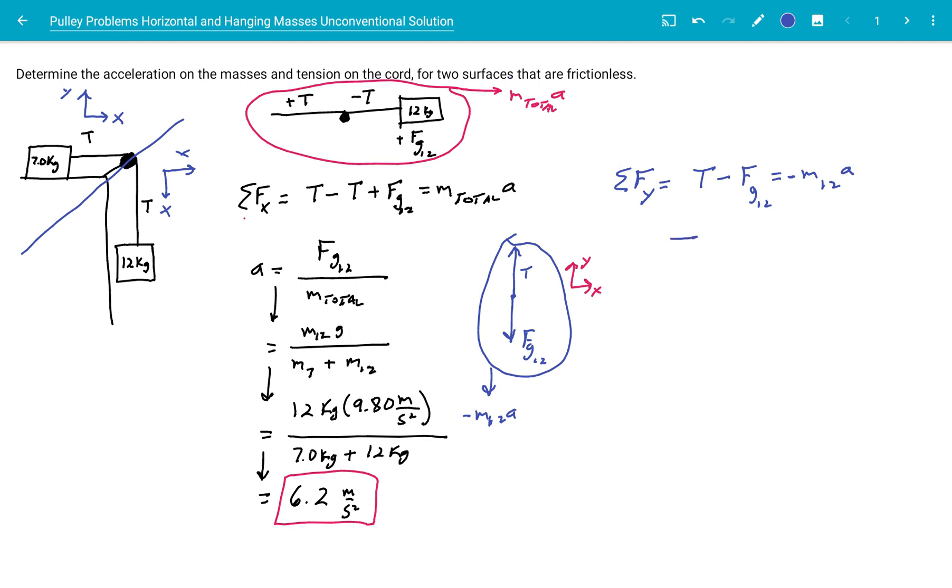To solve for the tension, T equals, and I'm going to change FG to M12G minus M12A. Let's make this look slick. M12, let's factor it out: G minus A. And let's put our values in. So 12 kilograms, 9.80 meters per second squared, minus our 6.2 meters per second squared is equal to 43 newtons. And that's our force with a surface that's frictionless.